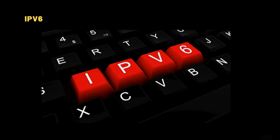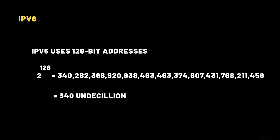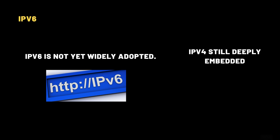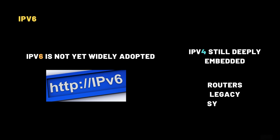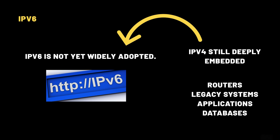IPv6 is the next-generation internet protocol designed to future-proof the internet. It uses 128-bit addresses compared to IPv4's 32 bits, giving us 2 to the power of 128 possible addresses — that's 340 undecillion addresses, enough to give every grain of sand on earth its own unique IP address, and still have plenty left over. However, IPv6 is not yet widely adopted. IPv4 is still deeply embedded in routers, legacy systems, applications, and databases. Migrating an entire global infrastructure takes time, which is why we currently live in a dual-stack world where most devices and websites support both IPv4 and IPv6 — like a city switching from gas-powered to electric cars.